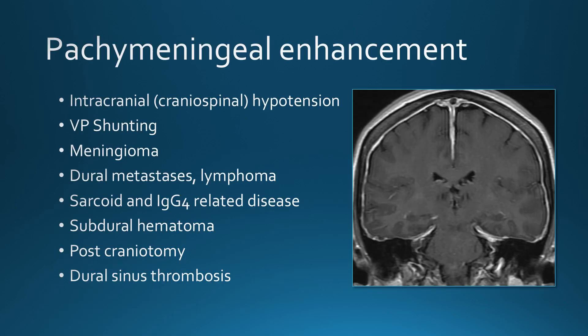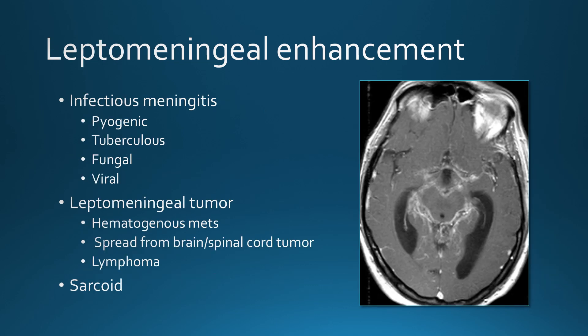Quick review: Pachymeningeal enhancement causes include intracranial hypotension and VP shunting; neoplasms such as meningioma, dural metastasis, and lymphoma; inflammatory diseases including sarcoid and IgG4; subdural hematoma; post-craniotomy; and dural sinus thrombosis. Leptomeningeal enhancement causes include infectious meningitis — pyogenic, tuberculous, fungal, and occasionally viral — leptomeningeal tumor from hematogenous metastasis to the subarachnoid space or spread from adjacent brain or spinal cord tumor, lymphoma, and sarcoid.